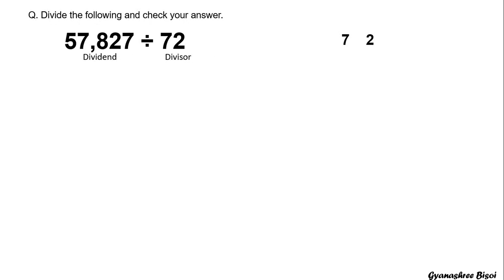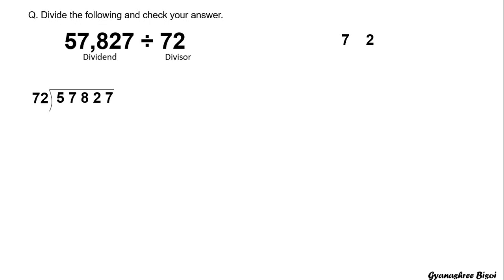Now put the number in division format. It is very easy to divide if we write the multiplication table of the divisor. Here the divisor is 72.